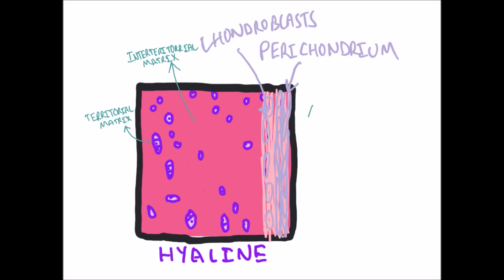Now that we understand the different types of cartilage, let's review its mechanism of growth, which is also applicable to bone. The first is appositional growth, which is when new cartilage is formed from chondroblasts of the perichondrium, which is the primary method of growth in mature cartilage.